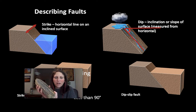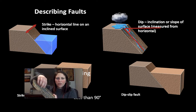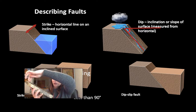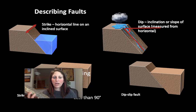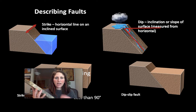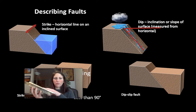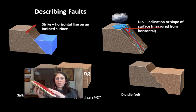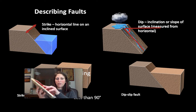Now if you imagine that same rock outcrop and pour some water on the face of the rock, the water is going to drip down that side with gravity. That's your dip direction. When we say a fault is a strike-slip versus a dip-slip fault, if the rock slips in the strike direction it's going to go along that strike line — this way or this way, right along that watermark.